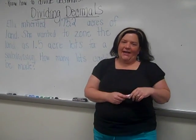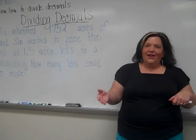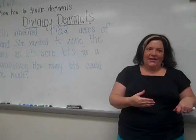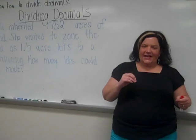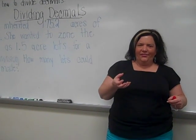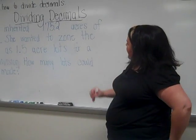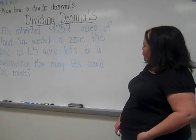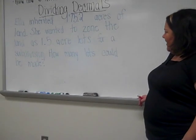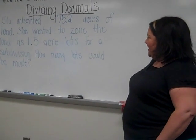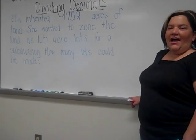So we're going to read it one more time, because children, just like a book or a movie or a song, when you view it, read it, or see it, or listen to it for the second time, you pick up on details you might not have the first time you did it. So, Ella inherited 175 and 2 tenths acres of land. She wanted to zone the land as 1 and 5 tenths acre lots for subdivision. How many lots could be made?